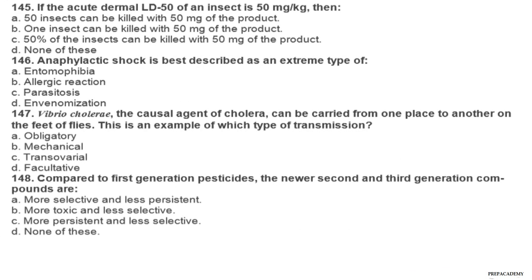Question 145. If the acute dermal LD-50 of an insecticide is 50 mg per kg, then: A 50 insects can be killed with 50 mg of the product, B one insect can be killed with 50 mg of the product, C 50% of the insects can be killed with 50 mg of the product, D none of these. Question 146. Anaphylactic shock is best described as an extreme type of: A entomophobia, B allergic reaction, C parasitosis, D myiasis.